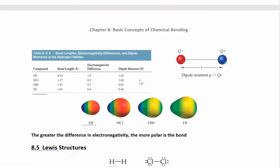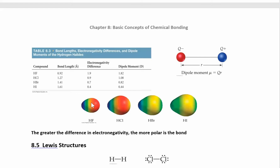Comparing HF, HCl, HBr, and HI: HF will have the biggest electronegativity difference because fluorine is the most electronegative. The differences keep decreasing down the halogen group, so HF is the most polar bond and HI is the least polar bond. The difference in color in these pictures shows how polar the bond is. We'll create these pictures in Spartan when we do Lab 7.